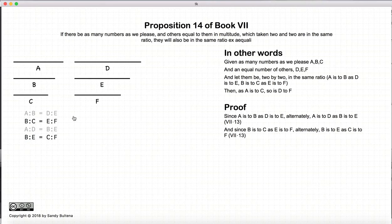And again, since B to C is equal to E to F, we can use the same Proposition 13 to say that the ratio of B to E is equal to the ratio of C to F.